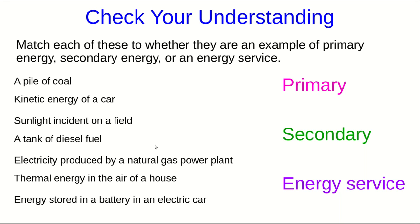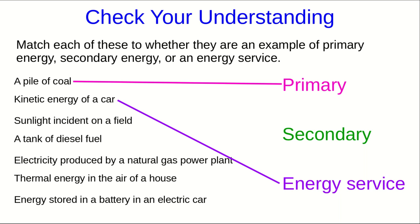I ended the previous part of this video by asking you to match these things to whether they are examples of primary energy, secondary energy, or energy services. Coal is something we dig up out of the ground, and so that makes it primary energy. The kinetic energy of a car is the end result of a whole lot of energy transformations and is essentially the goal of a bunch of them — that's an energy service. Sunlight incident on a field is a naturally occurring thing, and so that is primary energy.